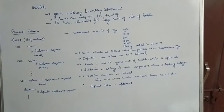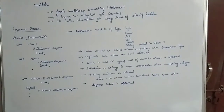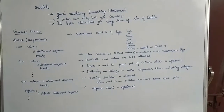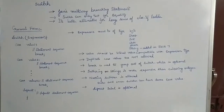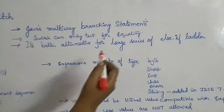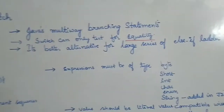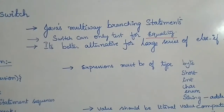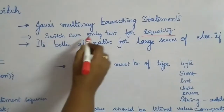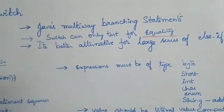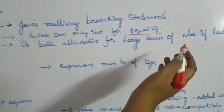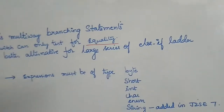Hello friends, welcome back to another session of Core Java tutorials. Today we'll see switch. Switch is a selection statement through which Java provides multi-way branching. Switch can only test for equality, whereas if checks for both logical and equality conditions. This is one difference you need to keep in mind.